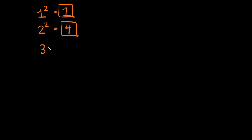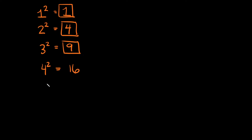Let's take three and square it. Three squared is equal to nine, so nine is a perfect square. Let's take four and square that — that is equal to 16. Five squared is equal to 25. Six squared is equal to 36, et cetera.